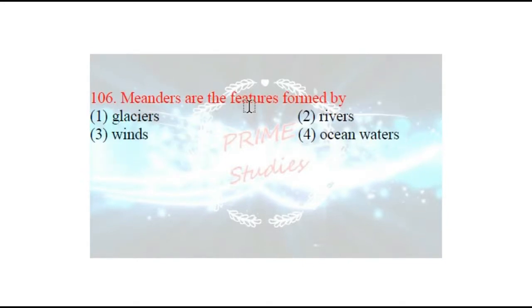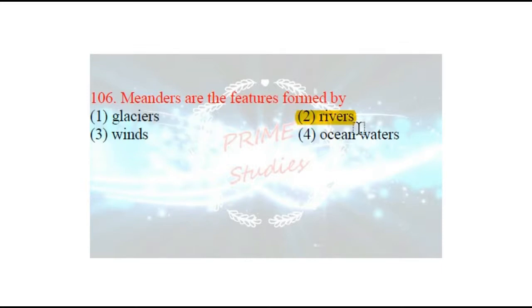Next question: meanders are the features formed by which process? Jo meanders hoti hain, woh kaun se karak ke dwara banti hain? The right answer is rivers — jo jal hota hai, jo nadiyan hoti hain, woh visharp banati hain, jinko hum meanders bolte hain.